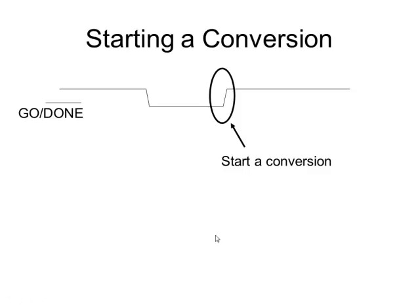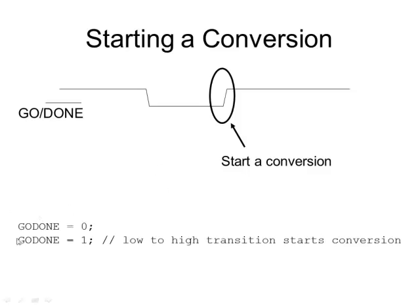To start a conversion, you need a low-to-high transition on the Go/Done bit. There's a predefined word the compiler already knows called go_done. You assign go_done the value zero, then assign it the value one, which causes the low-to-high transition that triggers a conversion and tells the ADC to start.